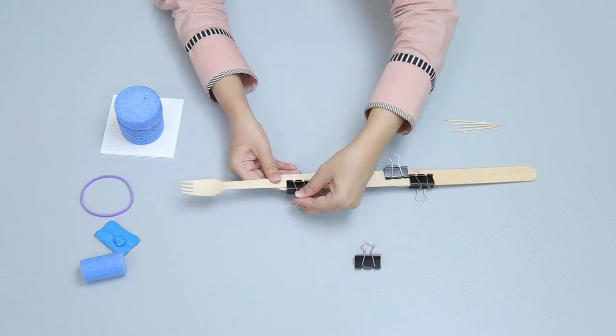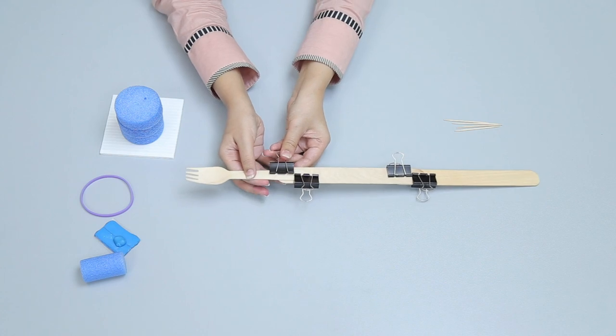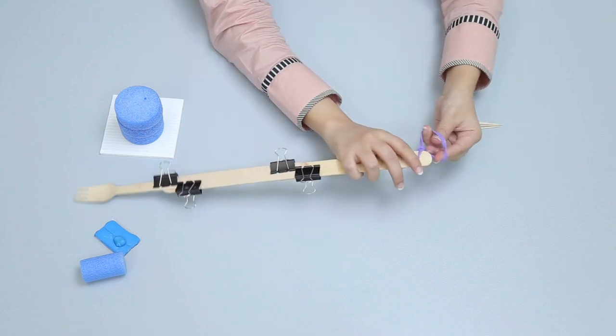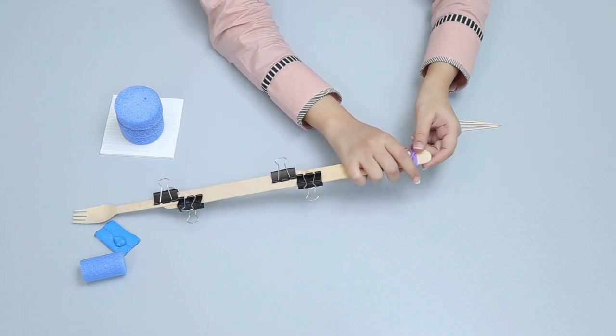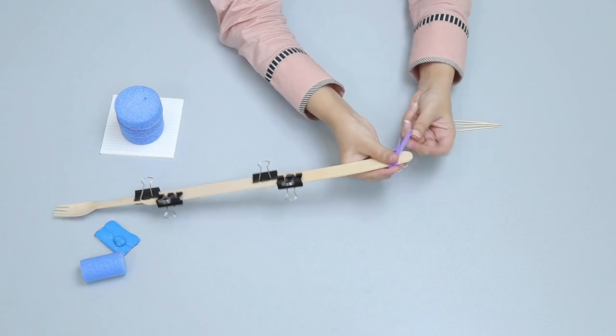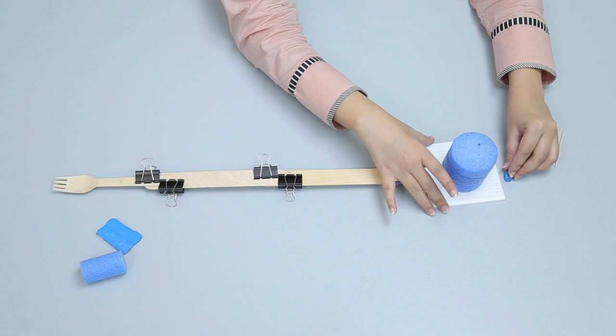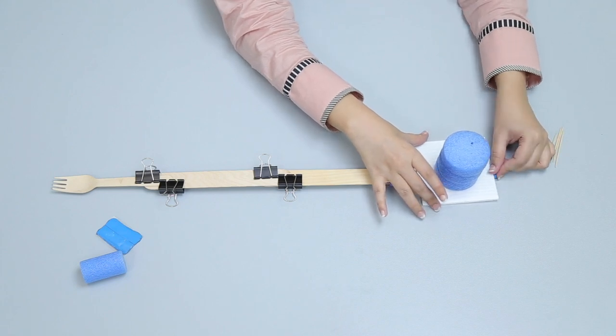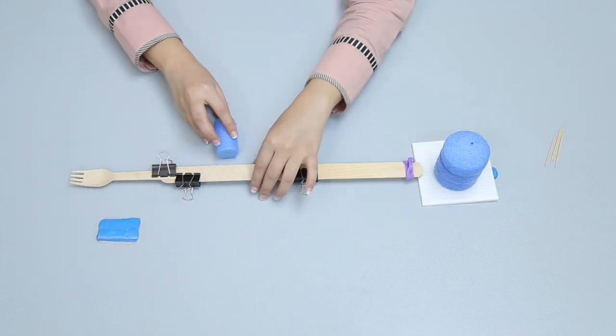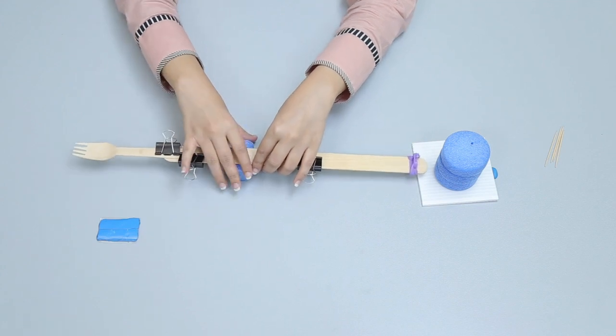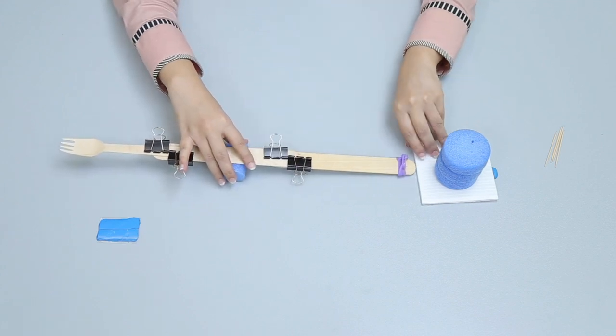Wrap a rubber band around one end of the craft stick to stop the load from slipping off. Use sticky tack so that the load may not move. Place the foam cylinder and lift the edge of the load from the table.